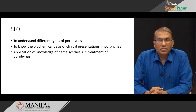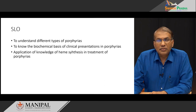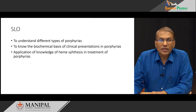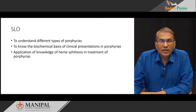Porphyrias are nothing but congenital or acquired defects in the synthesis of heme in our body. They can lead to severe disturbing symptoms because the precursors or intermediates of heme synthesis are highly photoreactive and can cause severe cutaneous manifestations on exposure to sunlight. They can also cause severe neurological manifestations, which is very disturbing to the patient. It is very imperative to know about the different types of porphyrias and how they can be treated.